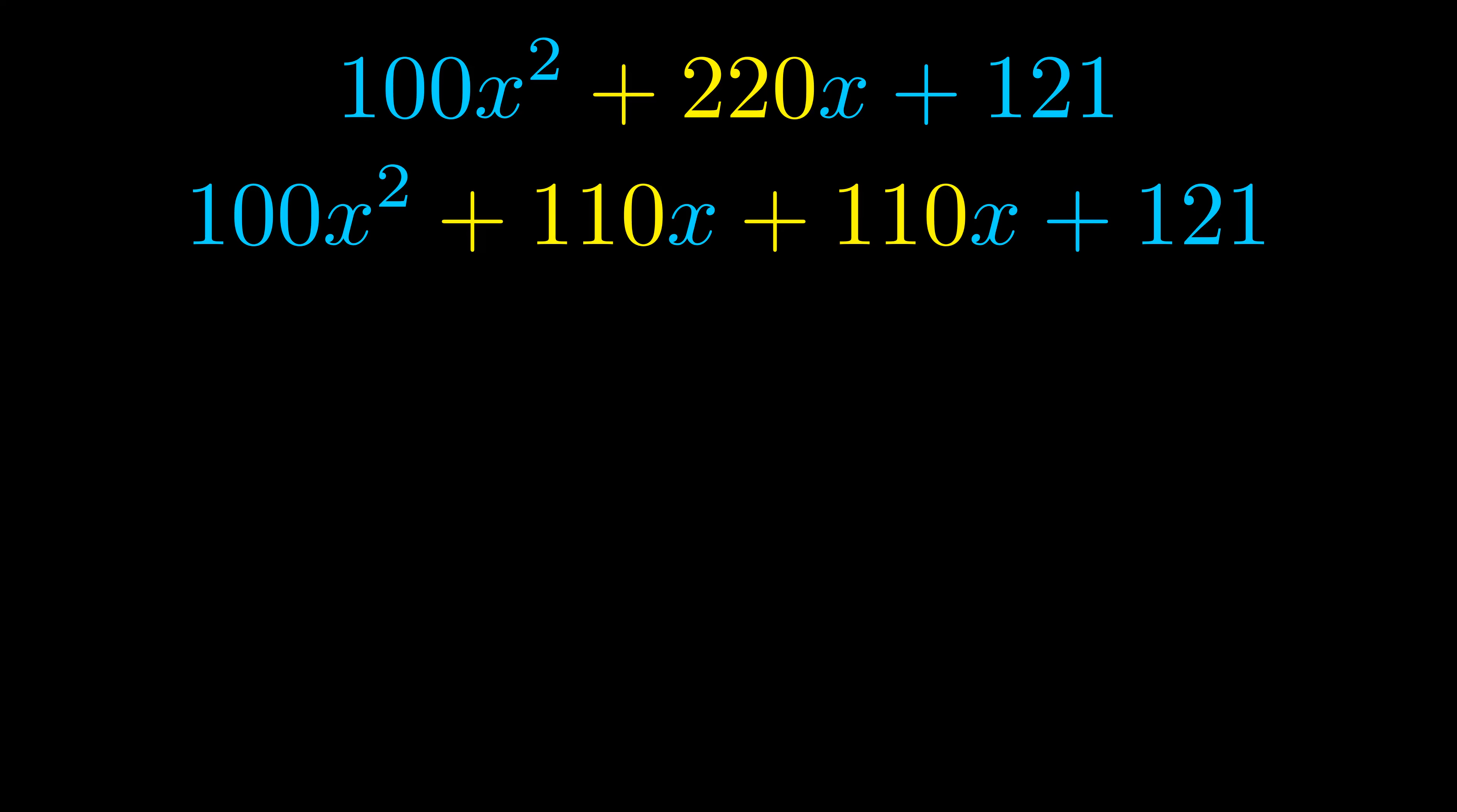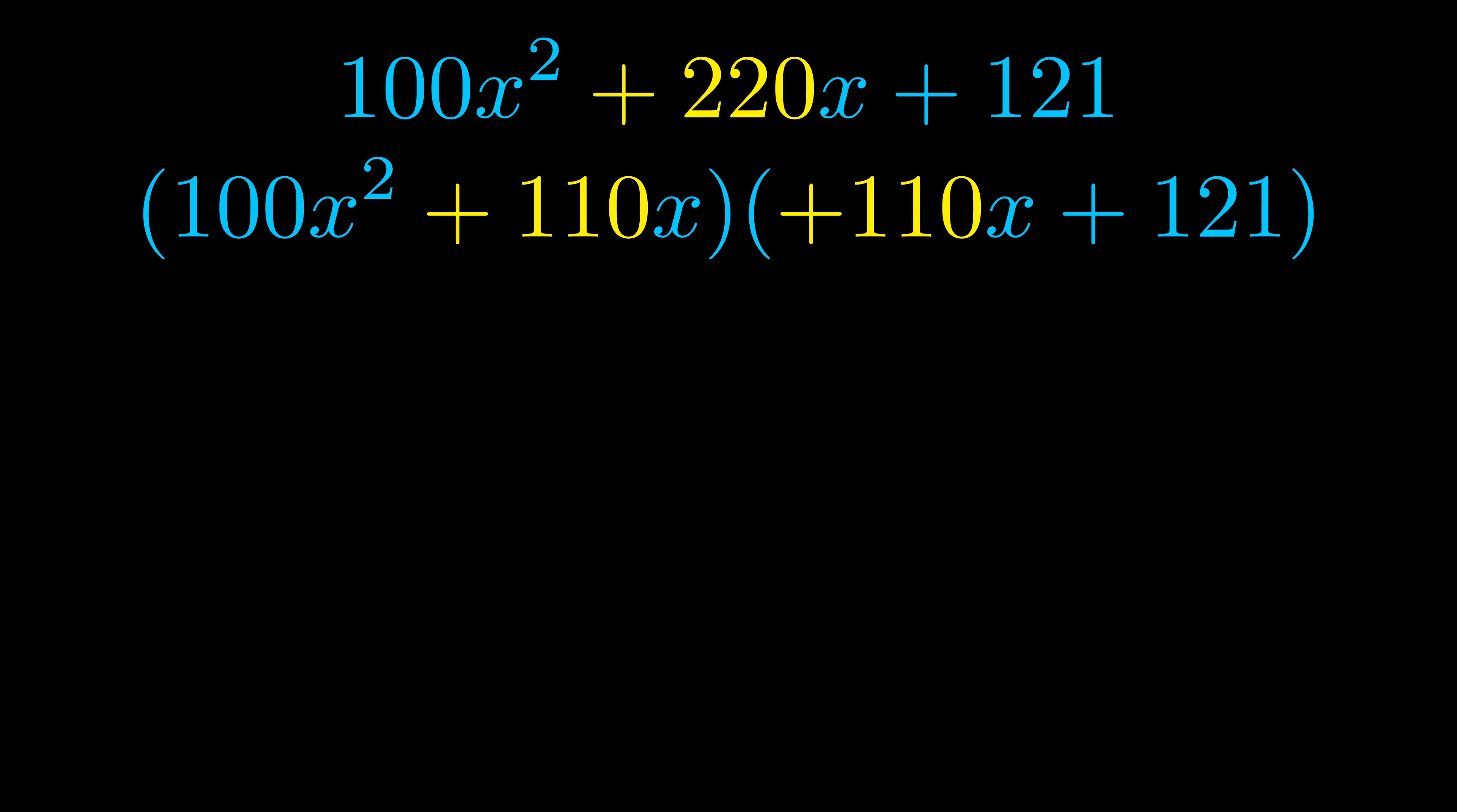Once we've done this we go ahead and put parentheses around the first term and the last term so that we can take the greatest common factor out of both terms. We can see the greatest common factor is now outside in green.